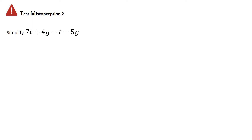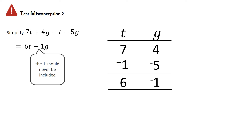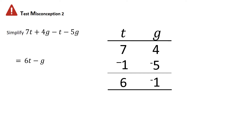The second misconception comes from a question like: simplify 7t plus 4g minus t minus 5g. We have 7t, 4g, negative 1t, and negative 5g. In the t column: 7 and negative 1 gives 6. In the g column: 4 and negative 5 gives negative 1. Some pupils wrote the answer as 6t minus 1g — but the coefficient 1 should never be written. The correct answer is 6t minus g. This rule carries through all the way to National 5 and Higher.